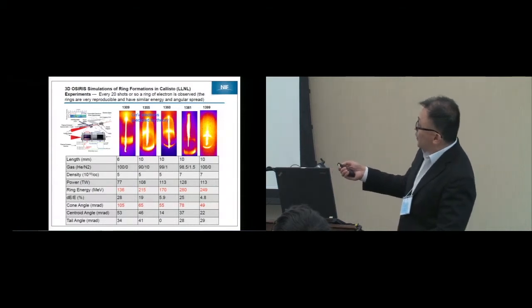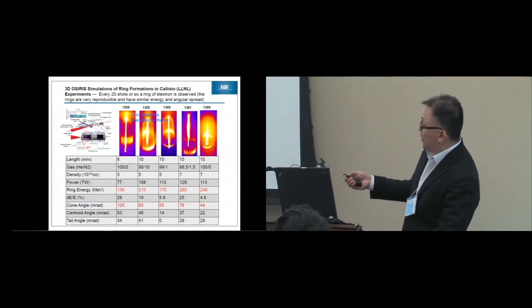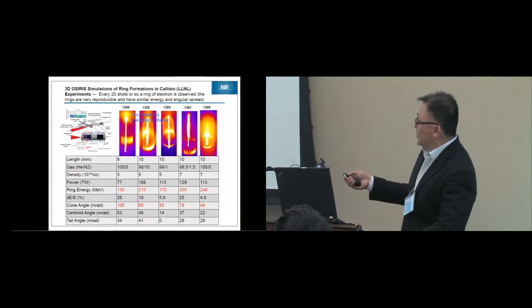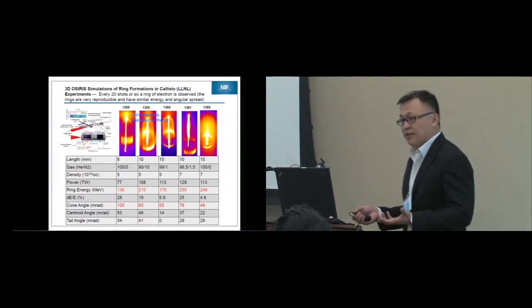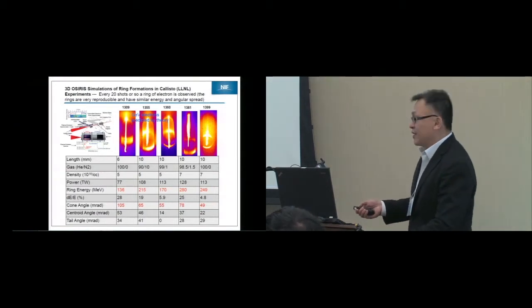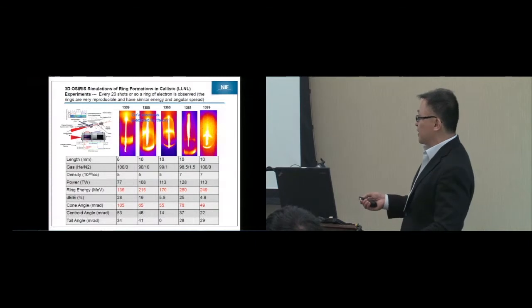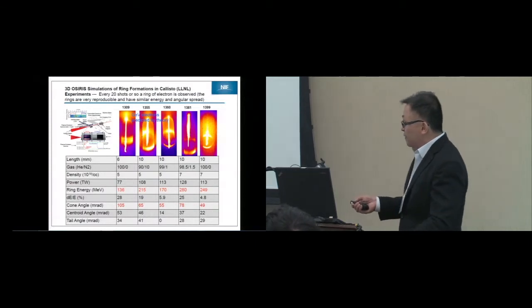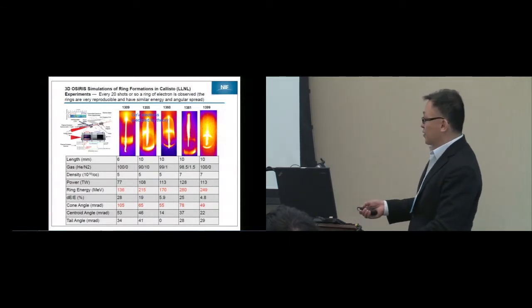Here you see the images in the CCD camera for different shots. The shot number is on top, and the vertical axis is the energy of these particles. Here you see a big bright spot, roughly at one GeV, which is what theories predict. However, from about every 20 shots or so, we see a ring structure. These rings are not random noise because they're very reproducible. The rings all have the same energy, between 180 to 250 MeVs, and they have a very small angular spread.